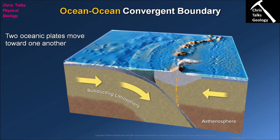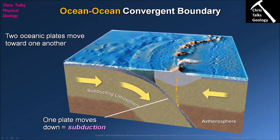We're going to start with the ocean-ocean convergent plate boundary. In this situation, two pieces of oceanic crust are colliding — one moving to the right, one moving to the left. The first key process is that one piece of oceanic crust is being pushed down into the Earth's mantle. This process is called subduction, and it is very important to understand because it turns up a lot in geology.